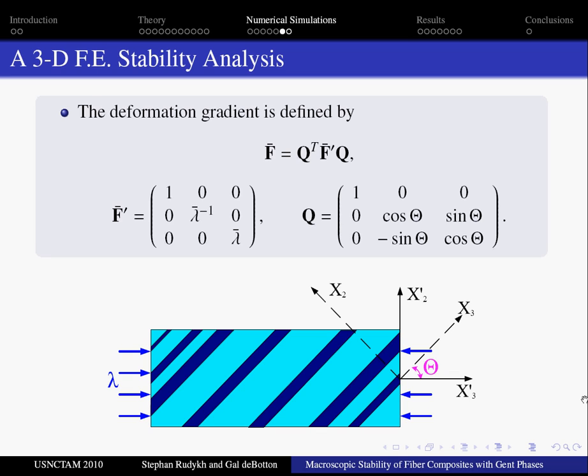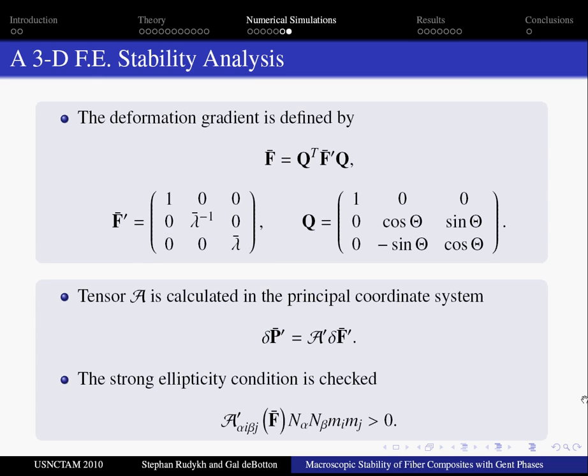In our numerical analysis, we define the average deformation gradient F via its counterpart in the principal coordinate system F prime and the transformation matrix Q. The tensor of elastic moduli is calculated in the principal coordinate system and the strong ellipticity condition is checked.